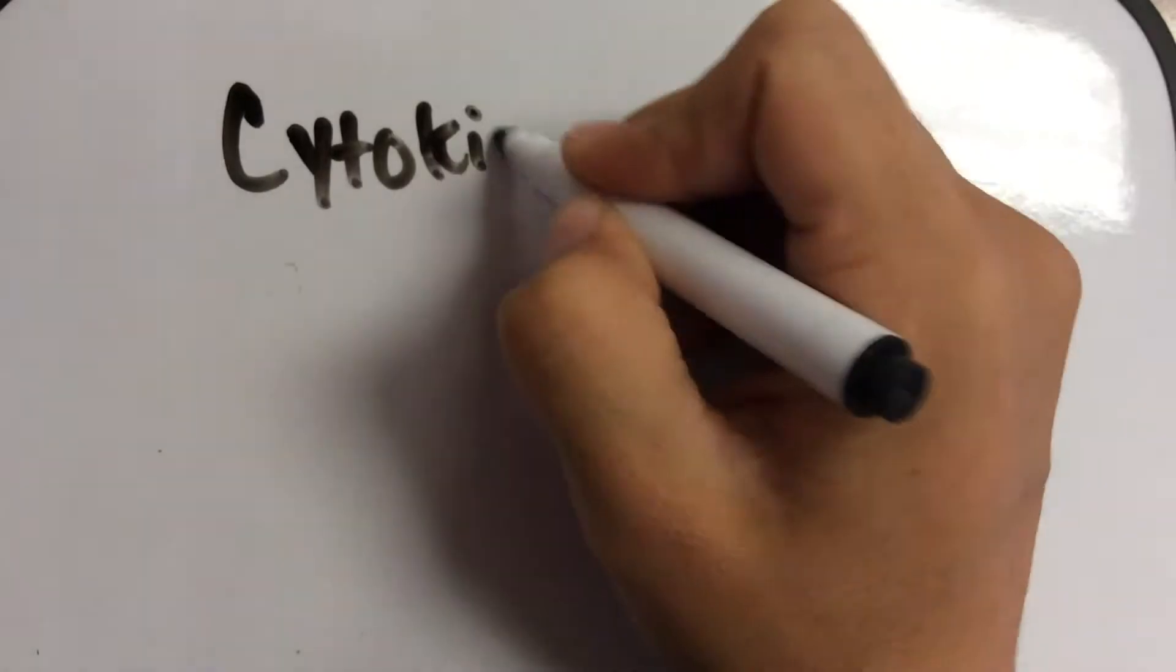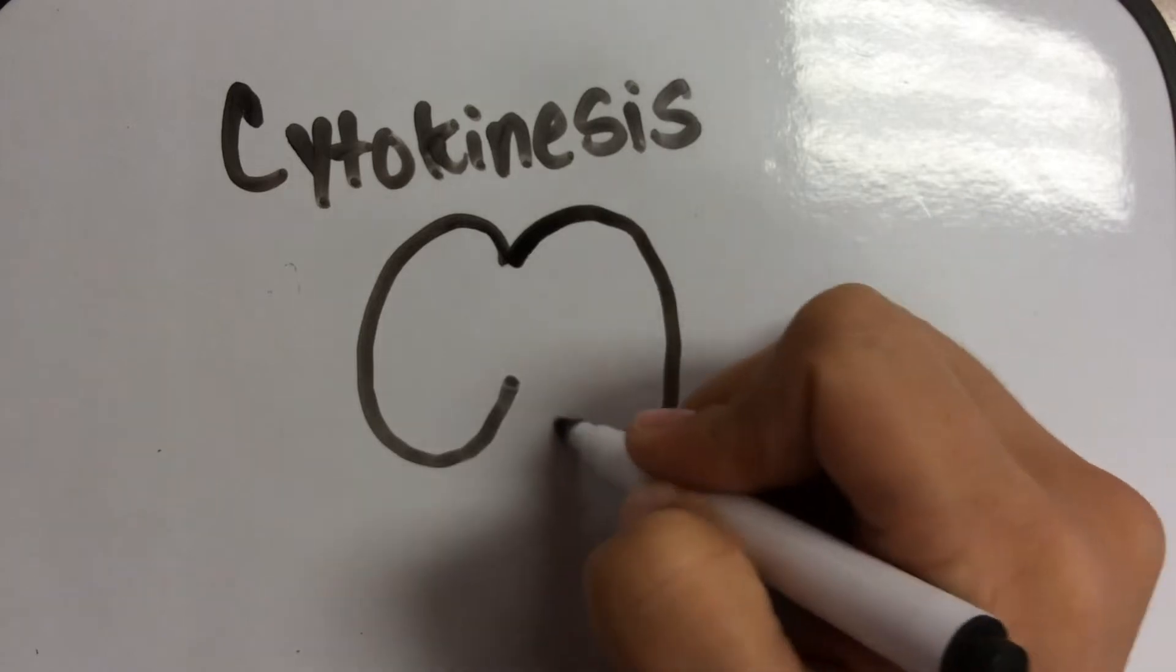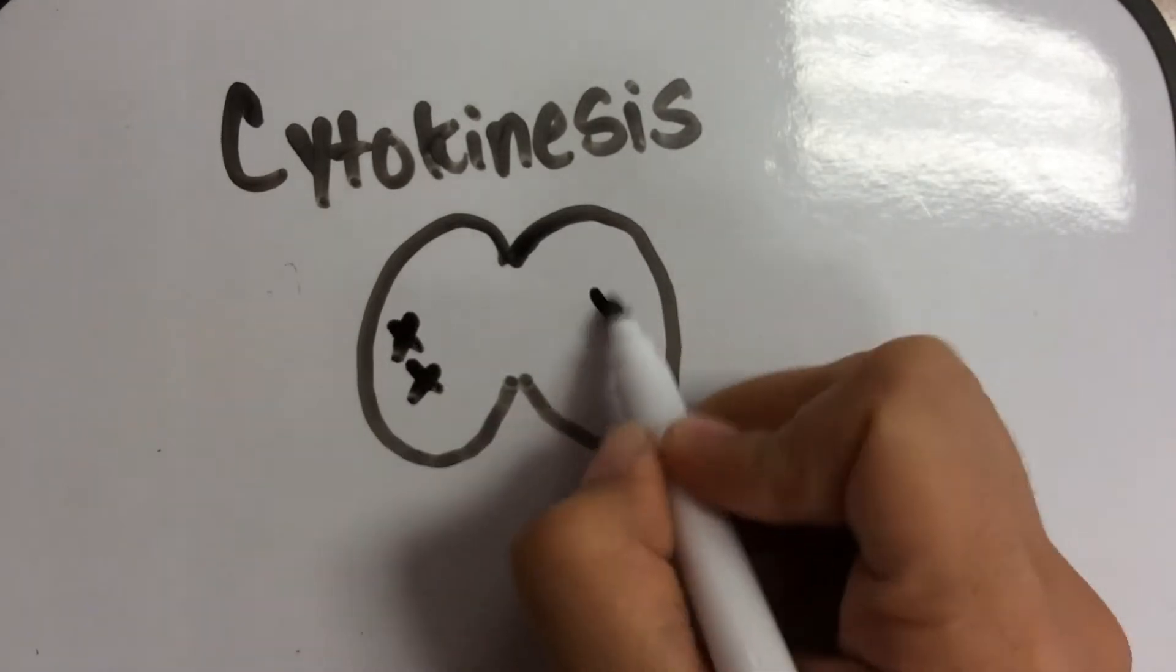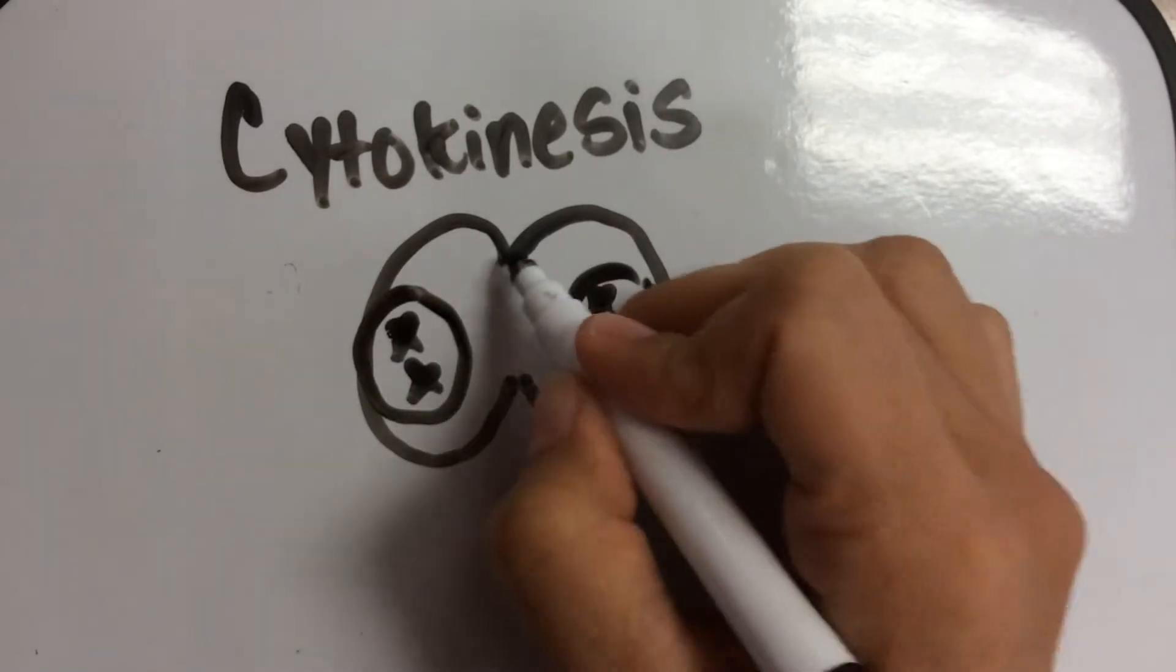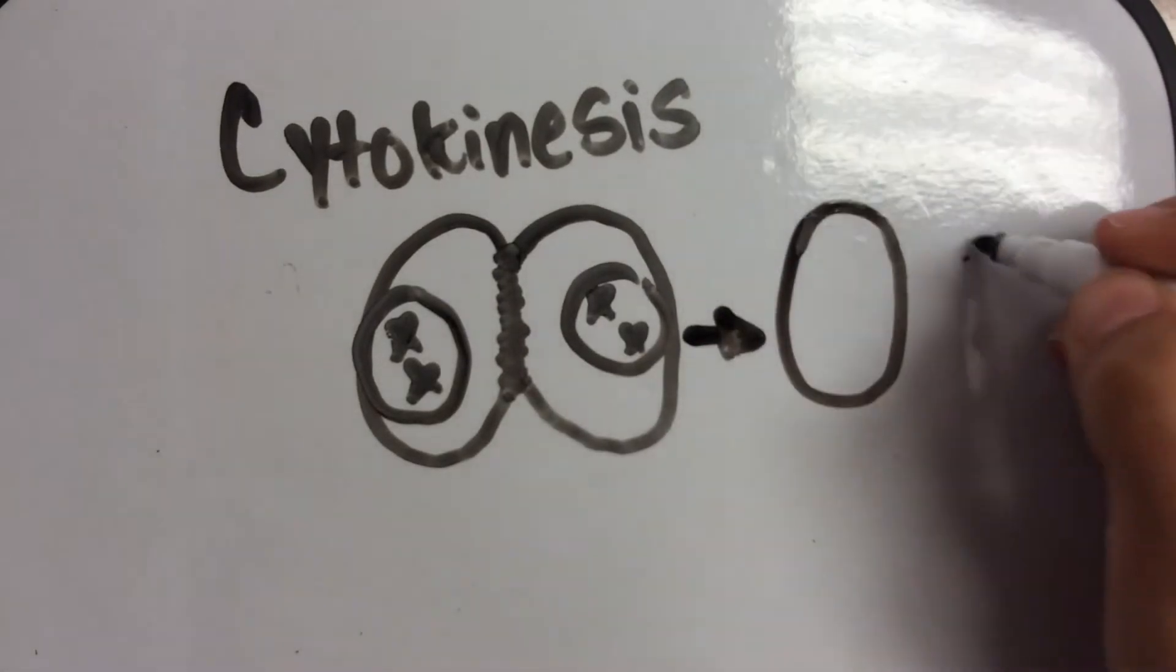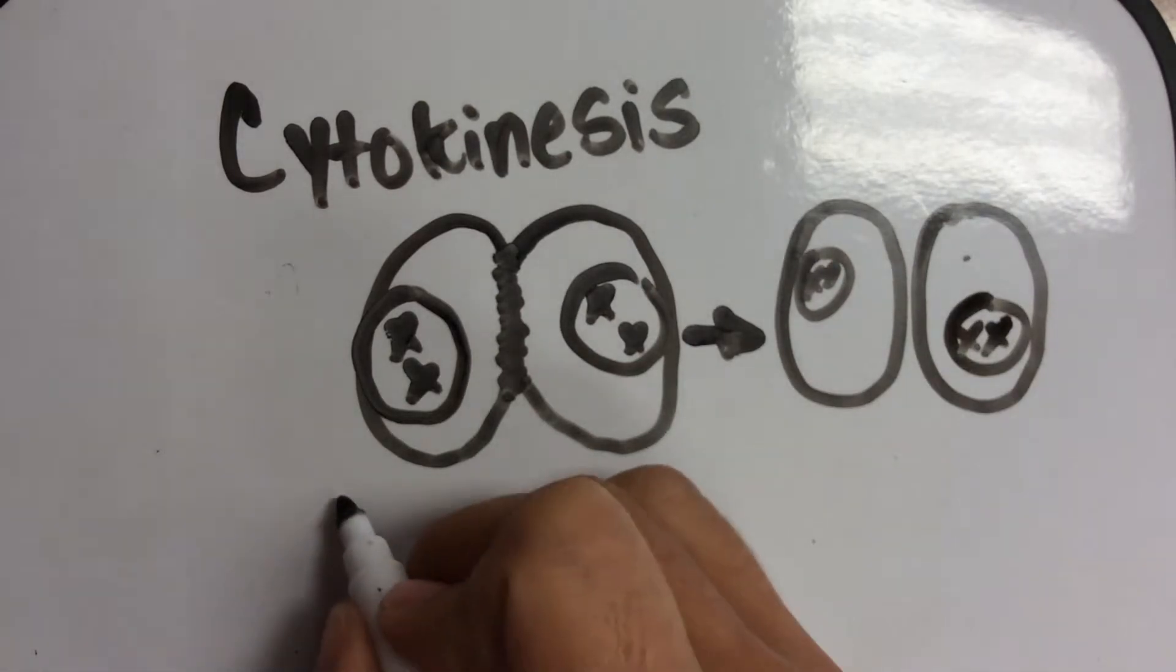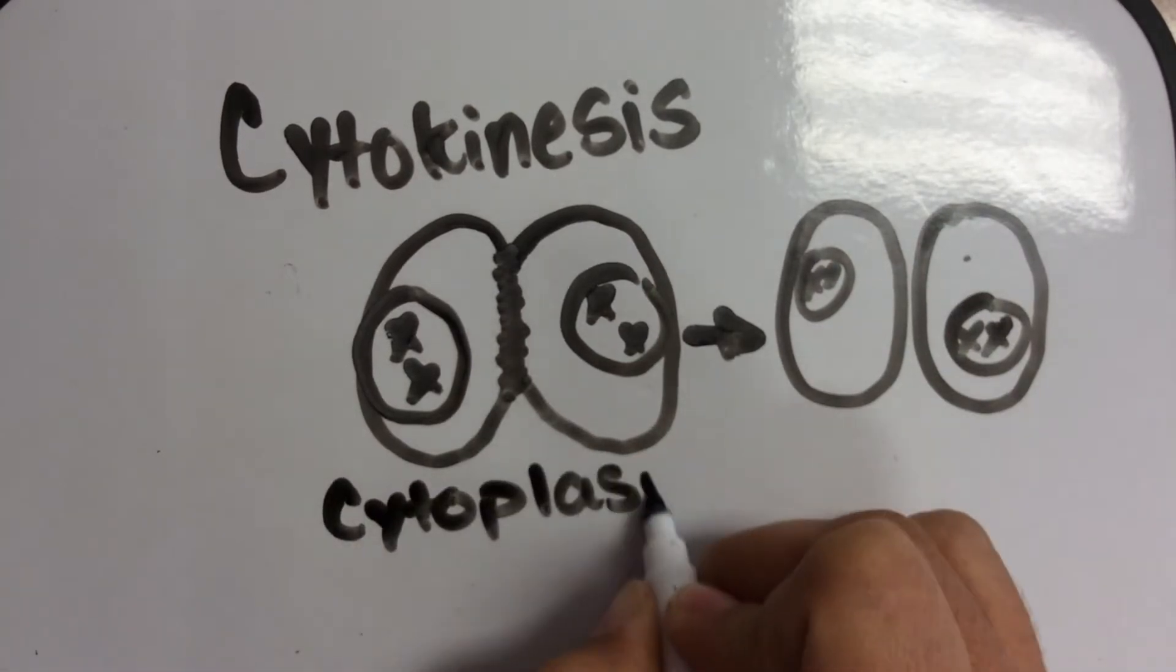Then you have the final step, cytokinesis. Cyto reminds me of cytoplasm. And that's exactly what is involved, your cytoplasm. So, here you see the nucleus is now formed on each side of the cell. And now the cell has actually divided. Or, rather, the cytoplasm has divided.